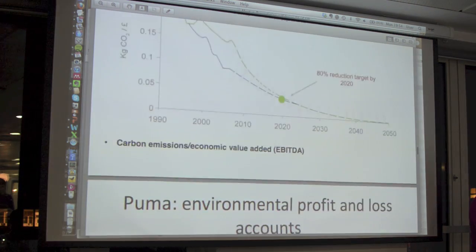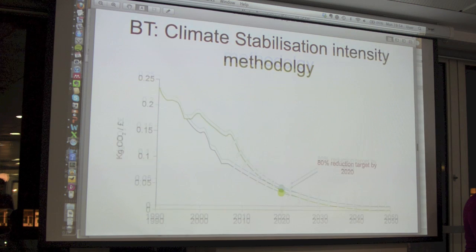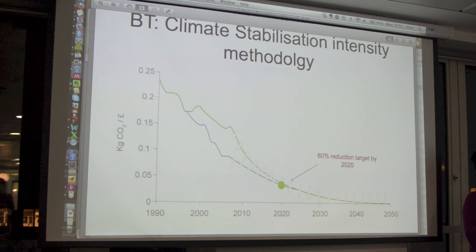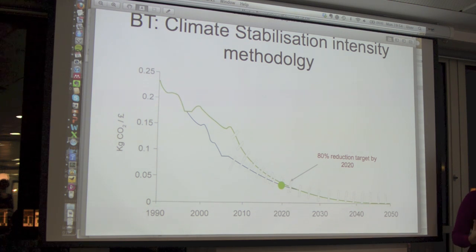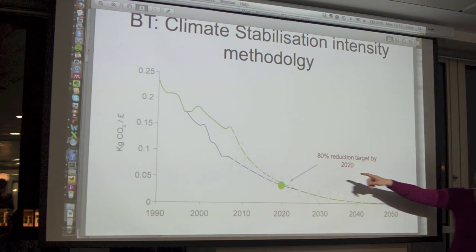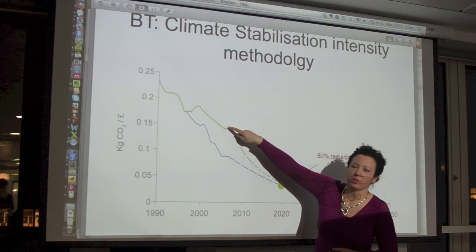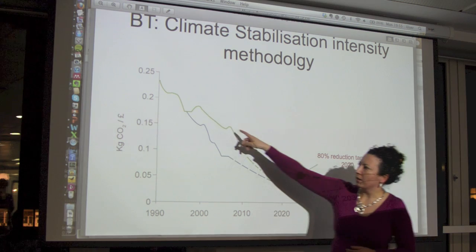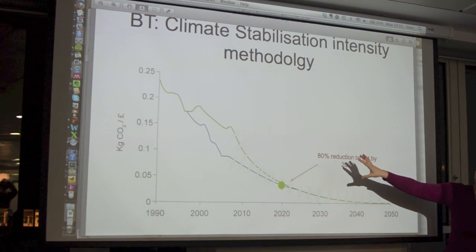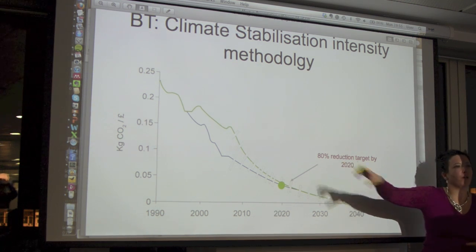There are four companies I know of that have had a go at trying to communicate their emissions and impacts in relation to global limits. This is British Telecom — they came out with this in 2009, just before Copenhagen. The big innovation they made was looking at UK emissions, the government target, and BT's emissions and target. The UK target is an 80% reduction, so they worked out the carbon productivity increase needed across the whole economy to reach that target, how much BT contributes to that economy, and therefore what BT's target should be.